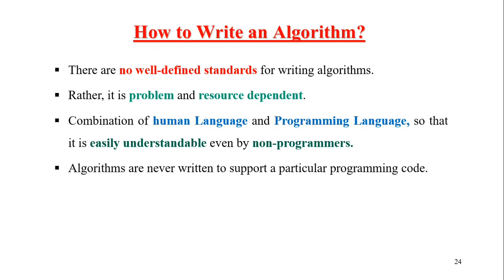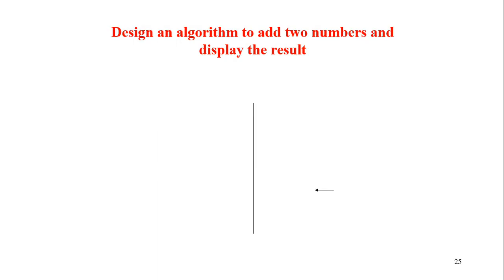Our last topic is: we need to read and write the algorithm. The algorithm is not a well-defined standard — it is a resource-dependent system with a human language and programming language combination, so it is easily understandable. An algorithm can support any specific programming language. A single algorithm can use C, C++, Python, or Ruby. The problem is: we have to read the algorithm and display the result.